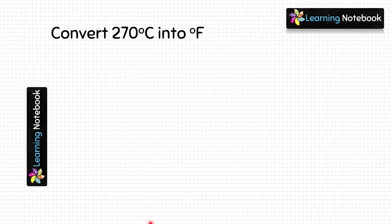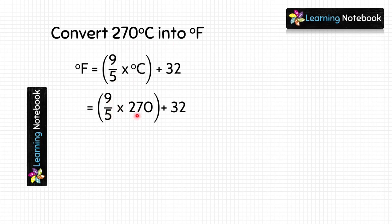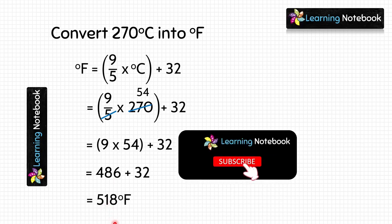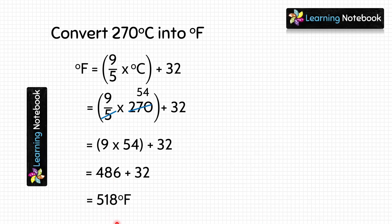Last question is: convert 270 degrees Celsius into Fahrenheit. Let's use the formula and put the value of Celsius here. We get 9/5 into 270 plus 32. Let's solve this first — simplify it and we get 9 into 54 plus 32, and 9 into 54 is 486. Add 32 to it and we get 518. So the answer is 518 degrees Fahrenheit. It means 270 degrees Celsius equals 518 degrees Fahrenheit.